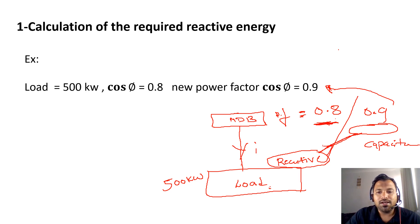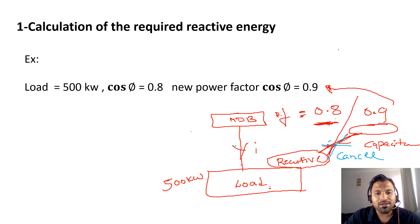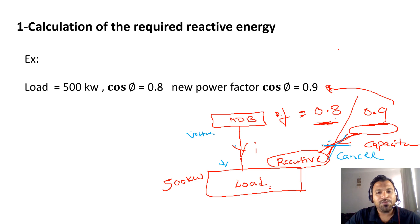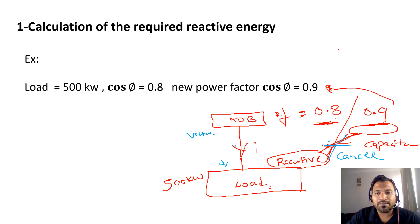The capacitor bank will produce reactive power in the opposite direction to the load's reactive power, so they will cancel each other out. When they cancel, the voltage sent and received will be the same because there are no losses. This is the concept of why we require capacitor banks in the network. Now, what we want to know is how much reactive power we need to produce in the network.